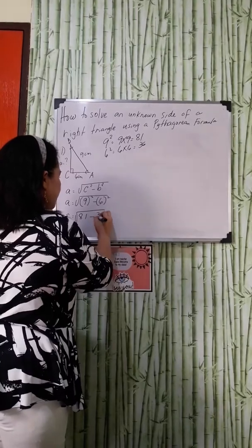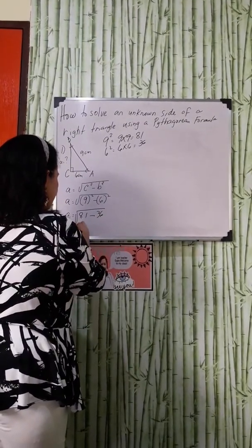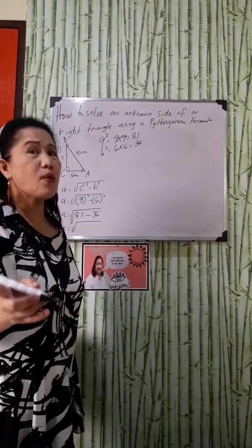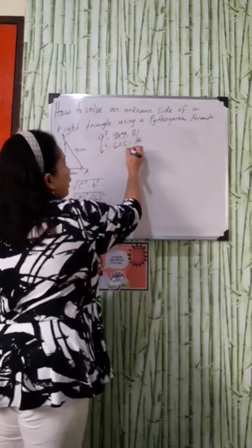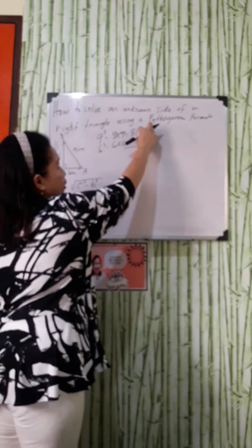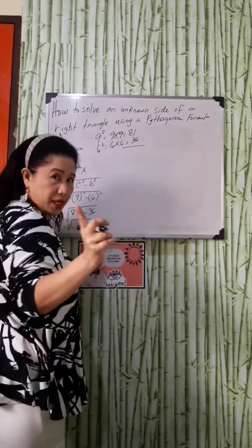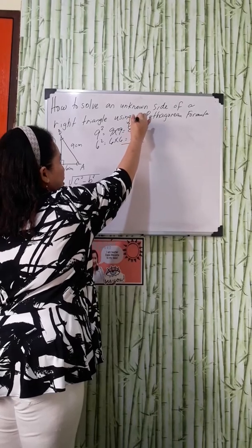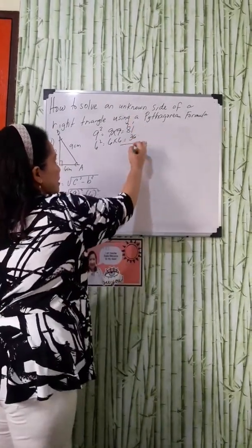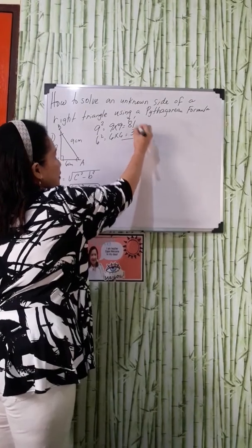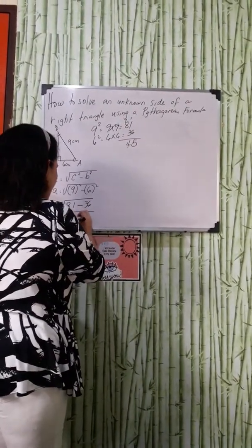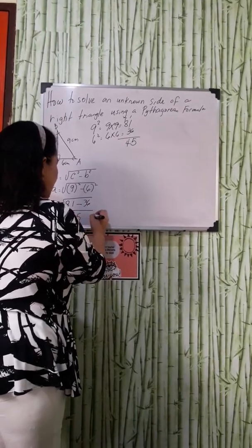A is equal to, you have to subtract 81 and 36. 1 and 6 cannot be, so you have to borrow 1 from 7. This will become 11. 11 minus 6 is equal to 5 and 7 minus 3 is equal to 4. Therefore, that is equal to square root of 45.